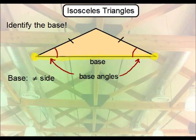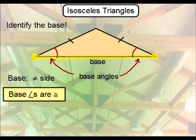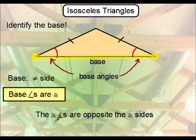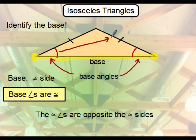Thus, if you are working within a proof or asked to determine how you know two angles are congruent, you would simply state that the base angles are congruent in an isosceles triangle. Just by identifying the base, you can always figure out which two angles are congruent. Also note that the angles that are congruent are opposite the sides that are congruent. If you draw an arrow out from one of those angles, it will point to the corresponding congruent side. The congruent sides are always opposite the congruent angles.